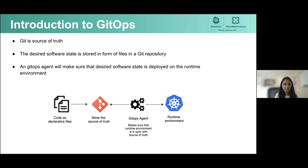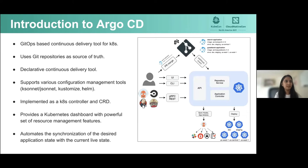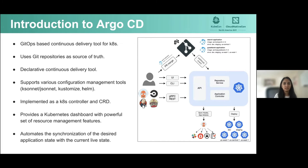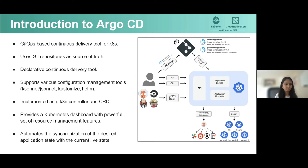Hence, Argo CD comes into picture. Argo CD is one such GitOps agent. It is a GitOps-based continuous delivery tool for Kubernetes, which uses Git as source of truth. It is declarative and supports a variety of configuration management tools such as Ksonnet, Jsonnet, Kustomize, Helm, and any custom config management tool configured as a config management plugin. It is implemented as a Kubernetes controller and CRD, and it provides a Kubernetes dashboard with powerful sets of Kubernetes resource management features.